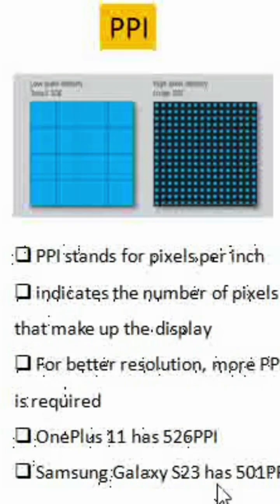Hello, let us understand what is PPI specification in mobile phones. PPI stands for pixels per inch.